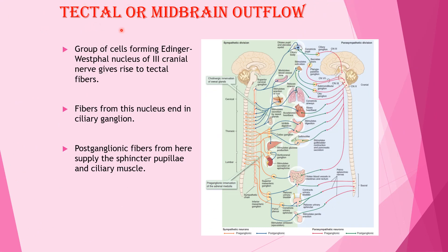In the tectal or midbrain outflow, a group of cells forms the Edinger-Westphal nucleus of the 3rd cranial nerve, giving rise to tectal fibers. Fibers from this nucleus end in the ciliary ganglion, and from the ciliary ganglion, postganglionic fibers arise and supply the sphincter pupillae and ciliary muscles.